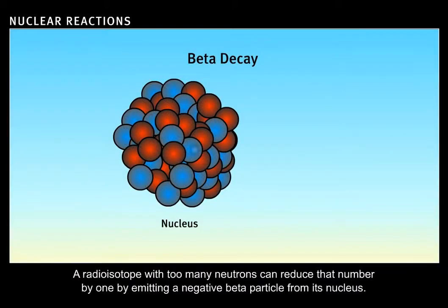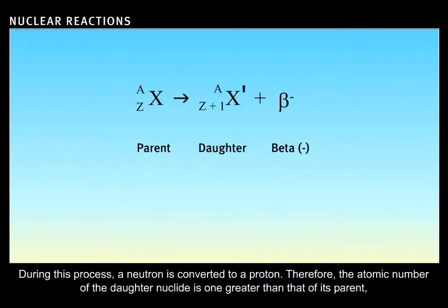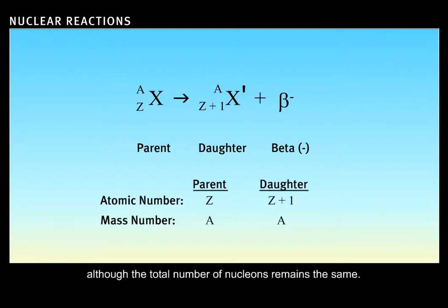A radioisotope with too many neutrons can reduce that number by one, by emitting a negative beta particle from its nucleus. During this process, a neutron is converted to a proton. Therefore, the atomic number of the daughter nuclide is one greater than that of its parent, although the total number of nucleons remains the same.